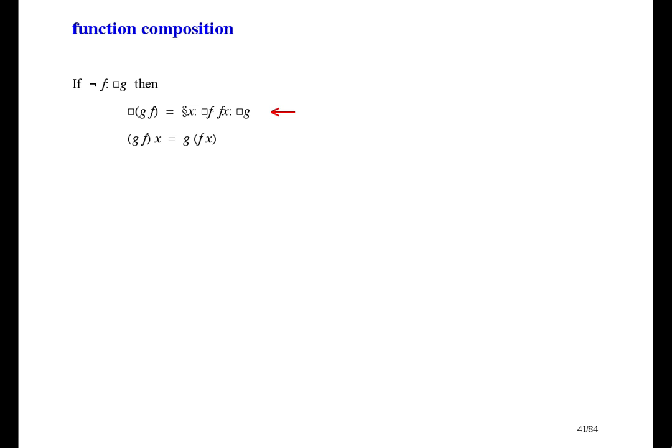For example, even is a function that applies to numbers, not to functions. So successor is not in the domain of even. So even successor is a composition. Its domain is the naturals. And when you apply even successor to three, you first apply successor and get four, and then you apply even and get true.